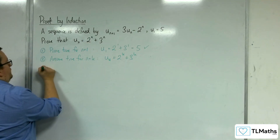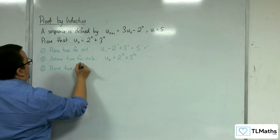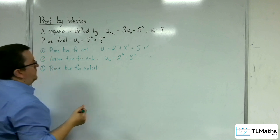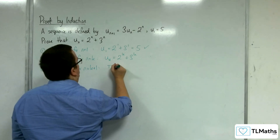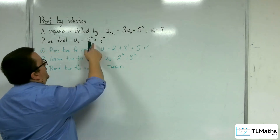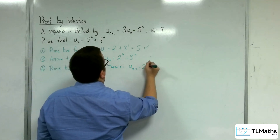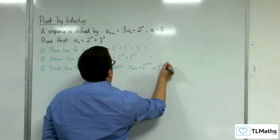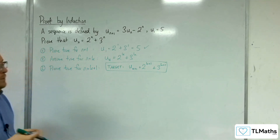Stage 3: we're going to prove it's true for n = k + 1. So let's think about our target. The target we want to reach here is substituting n for k + 1, so u_{k+1} = 2^{k+1} + 3^{k+1}. If we can reach that target at this stage, then we know we're done.